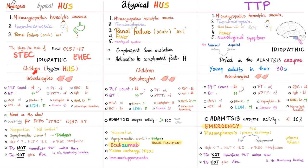All three conditions can show schistocytes. Lab results are very similar: platelet count is low, bleeding time is high, MCV is normal, hematocrit is low, hemoglobin is low, RBCs are low, PT and PTT are fine, bilirubin is high, LDH is high, haptoglobin is low, Coombs is negative, BUN and creatinine are high, and microscopic hematuria is present. What is unique: blood in the stool is unique for typical HUS, as is EHEC O157:H7. In atypical HUS, ADAMTS13 enzyme activity is very good — the problem is in the complement. In TTP, ADAMTS13 enzyme activity is very low.